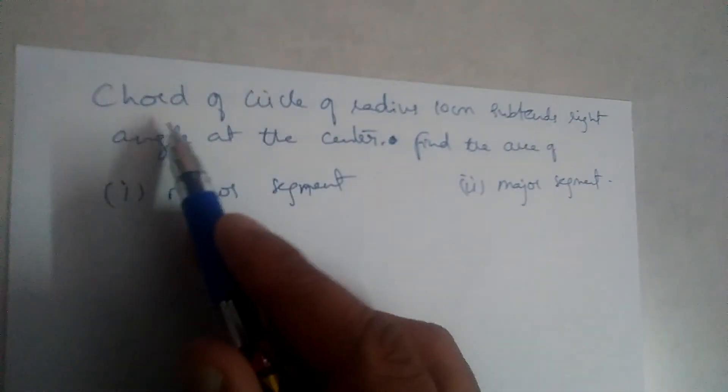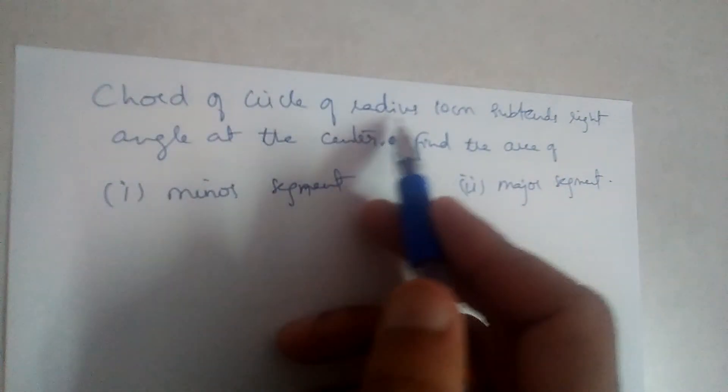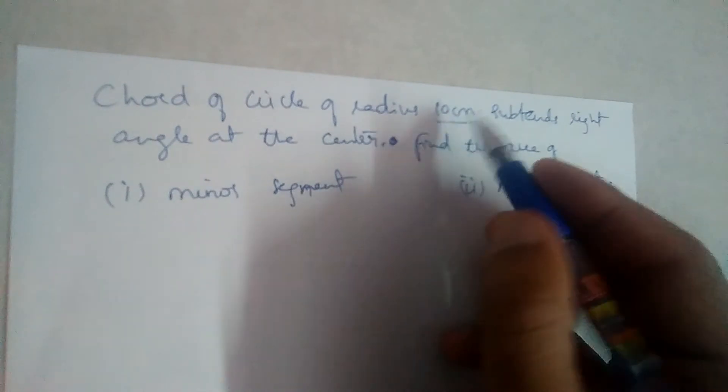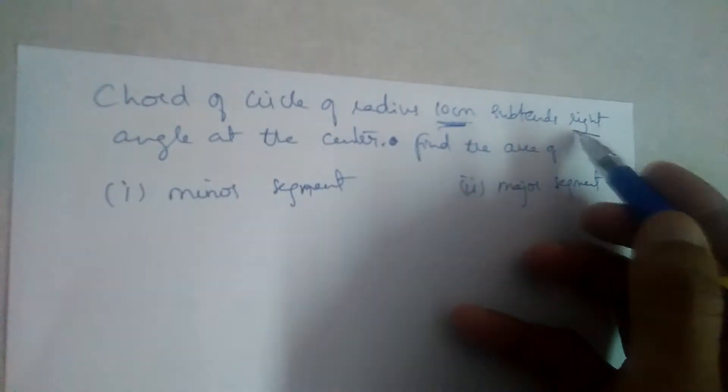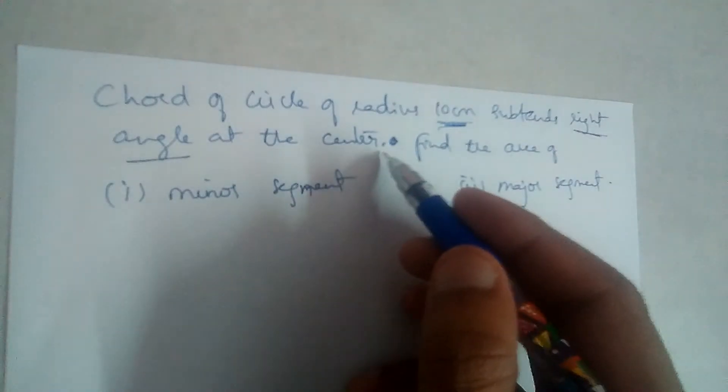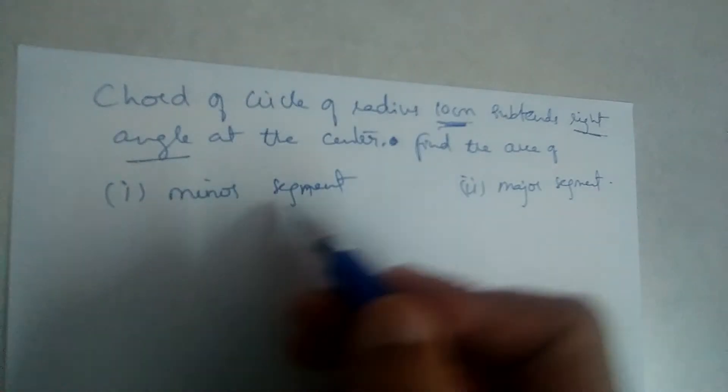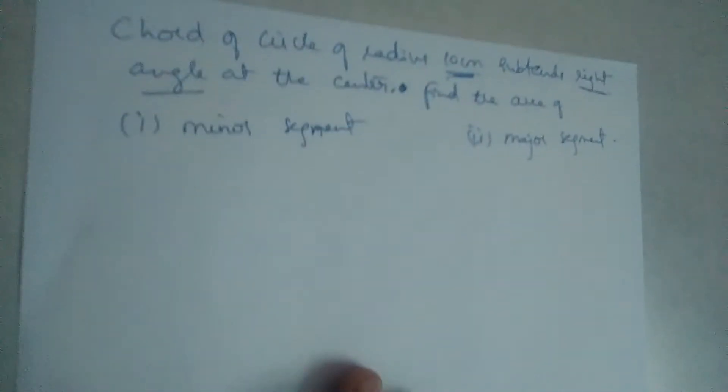So let us solve this problem. Chord of a circle of radius 10 cm subtends a right angle at the center. Find the area of minor segment and major segment.